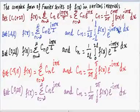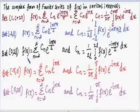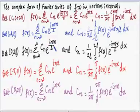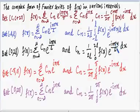Between the interval 0 to 2l, c_n = (1/2l) · ∫[0 to 2l] f(x) · e^(−inπx/l) dx.